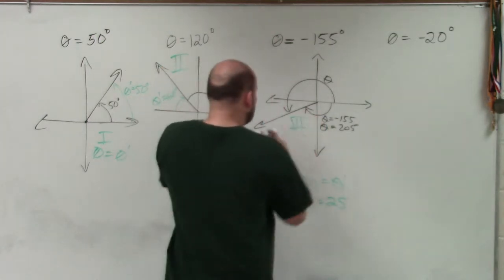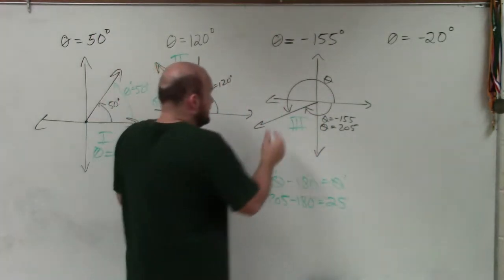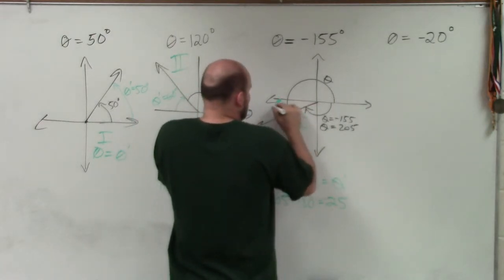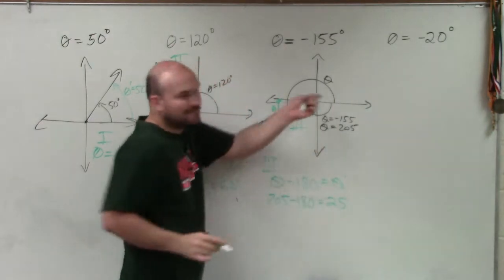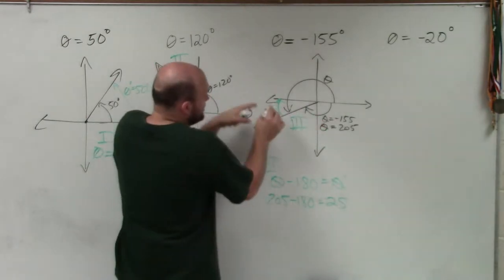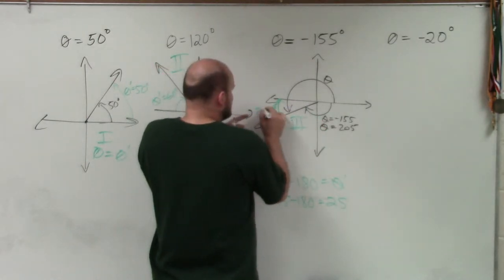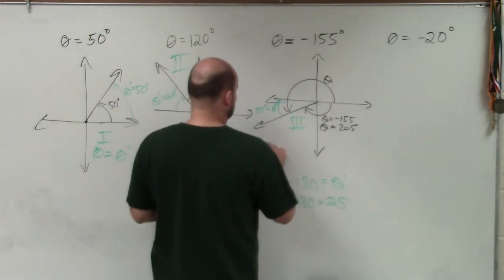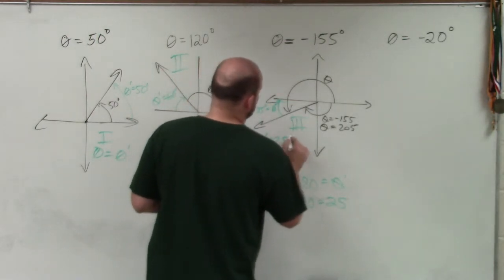So therefore, that means the angle is the acute angle between the terminal side, which is the same for the negative or the positive angle, between the terminal side and the x-axis. And this example is 25 degrees. So theta prime is 25 degrees.